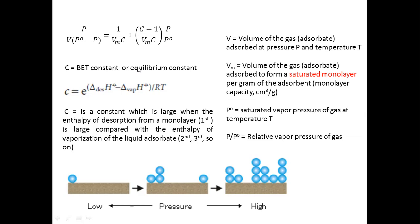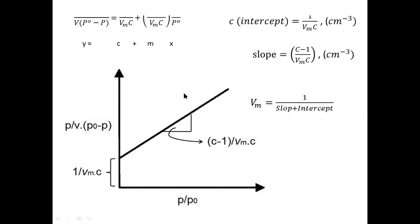We are going to use this equation to calculate vm. This is a straight line equation: on the y-axis you plot the BET parameter, and on the x-axis you plot p over P₀. The intercept is 1/(vm·C) and its unit is per centimeter cube — it may differ depending on the volume units used in the specific experiment. The slope is also defined accordingly.